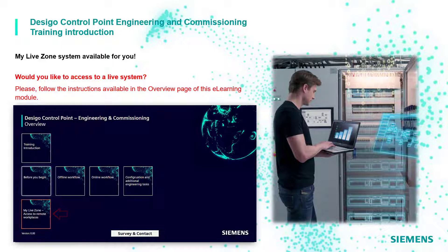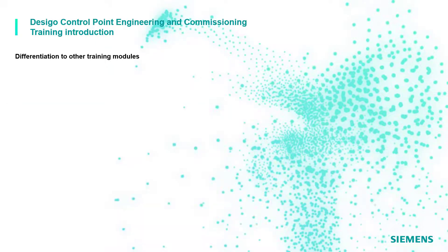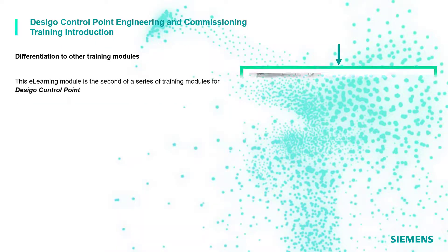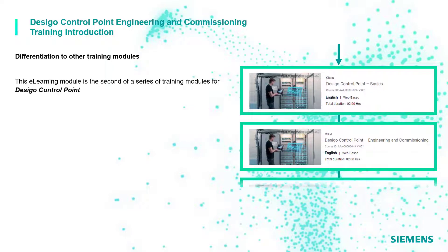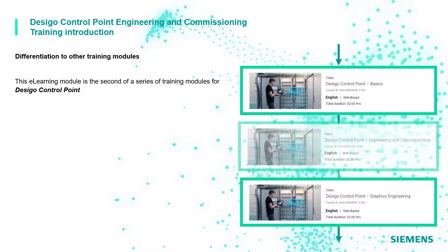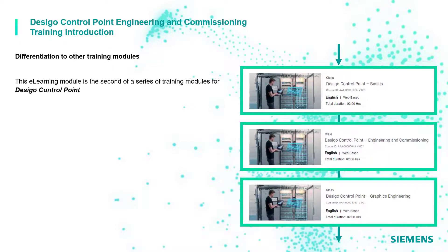This e-learning module is the second of a series of training modules for DCGO Control Point. In this specific module, we are going to acquire basic knowledge about the engineering and commissioning of DCGO Control Point, preparing yourself for the third and last training module.